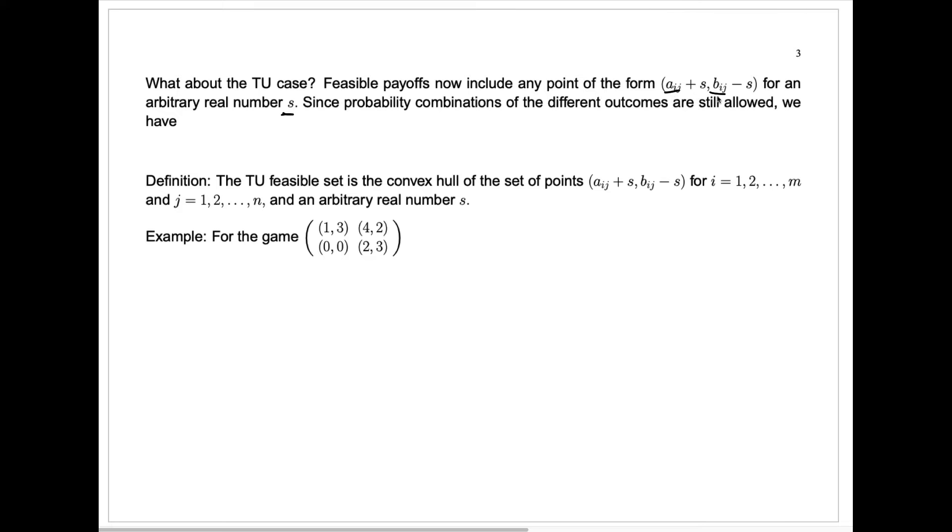Make that choice of row and column, row I, column J. And then they could agree to a side payment where player two pays an amount S to player one as a side payment. So player one would actually receive Aij plus S, and player two would actually receive, in the end, Bij minus S.